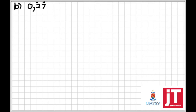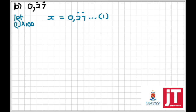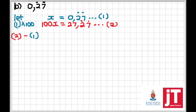In the last question, we are given 0.27 recurring — both the 2 and the 7 are recurring, giving 0.272727... Same principle: let x = 0.27̄, and that is equation 1. Because the decimal recurs after two digits, we multiply equation 1 by 100, giving 100x = 27.27̄, which becomes equation 2.